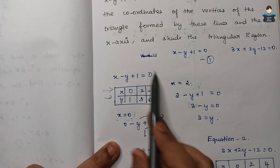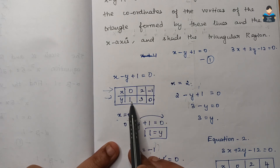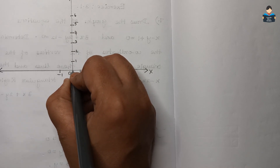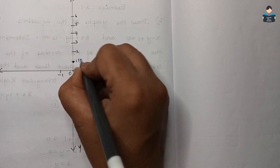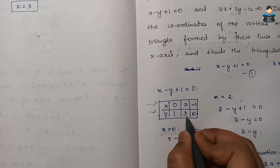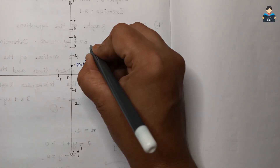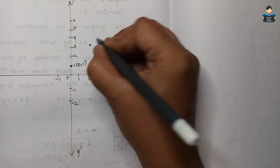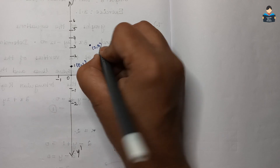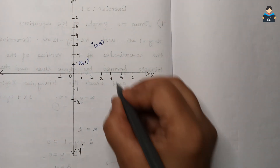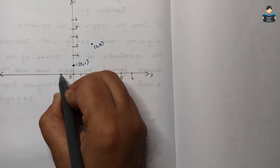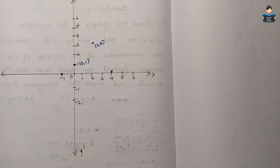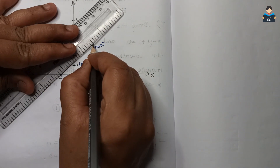For equation 1, plotting the points: x equal to 0, y value 1 — that is point (0, 1). Next value is (2, 3): x is 2, y value is 3. Third point is (minus 1, 0) — on the x-axis at minus 1. We join these three points to form the line for equation 1.